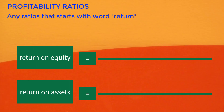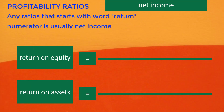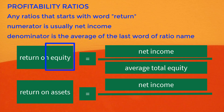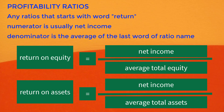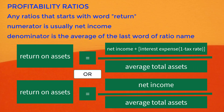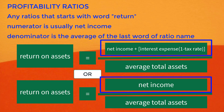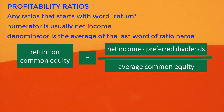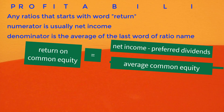For ratios that start with the word 'return,' the numerator is usually net income. The denominator is the average of the last word of the ratio name. In return on equity, the last word is equity, so the denominator is average total equity. The same technique applies to return on assets and return on common equity. Note that some books have a different numerator for return on assets — check the textbook used in your classroom and the official formula for the exam you will be taking. For return on common equity, the numerator is not net income; you need to deduct preferred dividends because common stockholders do not receive preferred dividends.